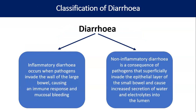Classification of diarrhea: it can be inflammatory or non-inflammatory. In inflammatory diarrhea, the organism invades the intestinal wall and there is mucosal bleeding. In non-inflammatory diarrhea, organisms attack the epithelial layer, staying there and increasing secretion of water and electrolytes into the lumen. Based on this type of diarrhea, management also differs, so we need to know which is inflammatory and which is non-inflammatory.